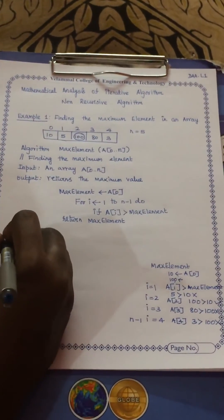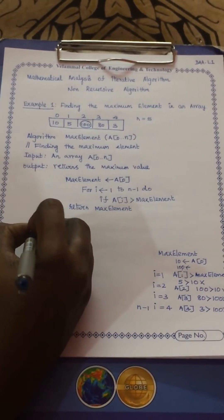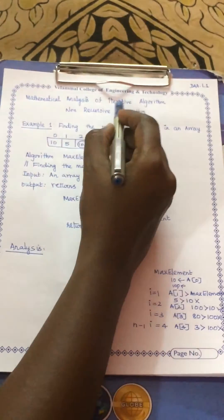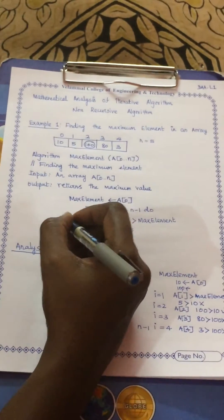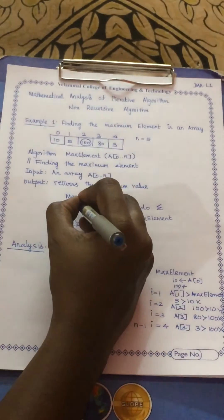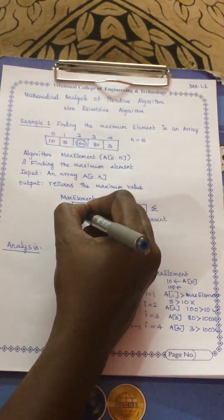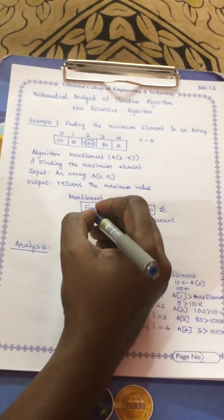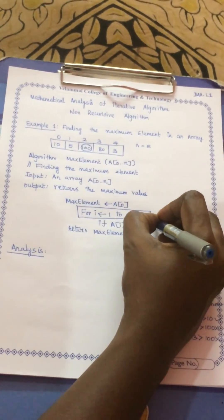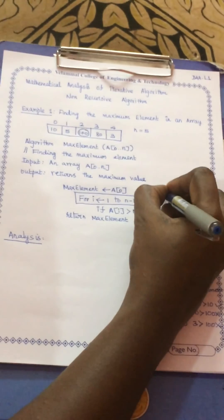Now comes the analysis. For analyzing the iterative algorithm, we need to find the summation formula. The summation formula is the iterative statement which is executed more than once. Here, the summation formula corresponds to the loop body, where i starts from 1 and goes up to n minus 1.